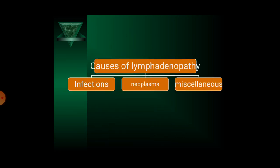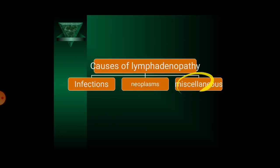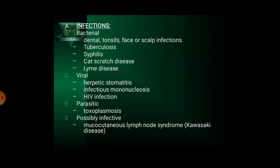There are basically three causes of lymphadenopathy: infection, neoplasm and miscellaneous. Infection could be bacterial, viral, parasitic and infective. Bacterial causes include dental, tonsillar or scalp infections, tuberculosis, syphilis, cat scratch disease and Lyme disease. Viral causes include herpetic stomatitis, infectious mononucleosis, and HIV infection. Parasitic causes include toxoplasmosis, and infective causes include mucocutaneous lymph node syndrome, also known as Kawasaki disease.